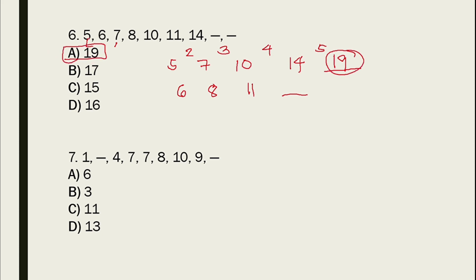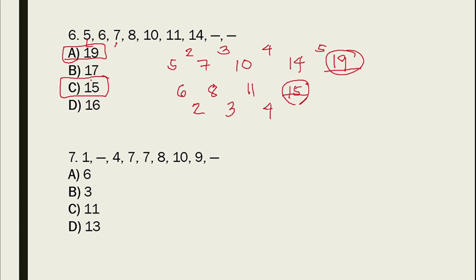But there are 2 unknowns here. For the second sub-sequence: 6, 8, 11 — so 6 plus 2 equals 8, plus 3 equals 11. Therefore, plus 4 makes it 15. So A equals 19 and C equals 15, because there are 2 unknowns.